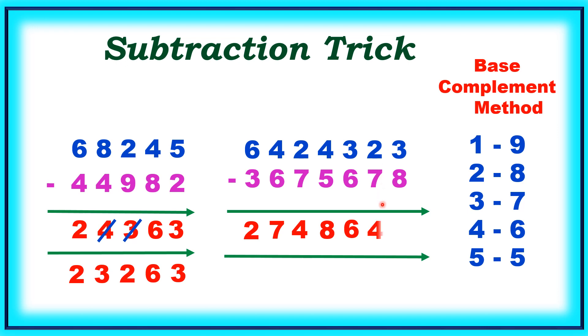7 is not possible, so complement is 3. 3 plus 2 is 5. Instead of 5, I am writing 4 because next number is not possible. Last one is 5. 8 complement is 2. 2 plus 3 is 5. This is the answer.